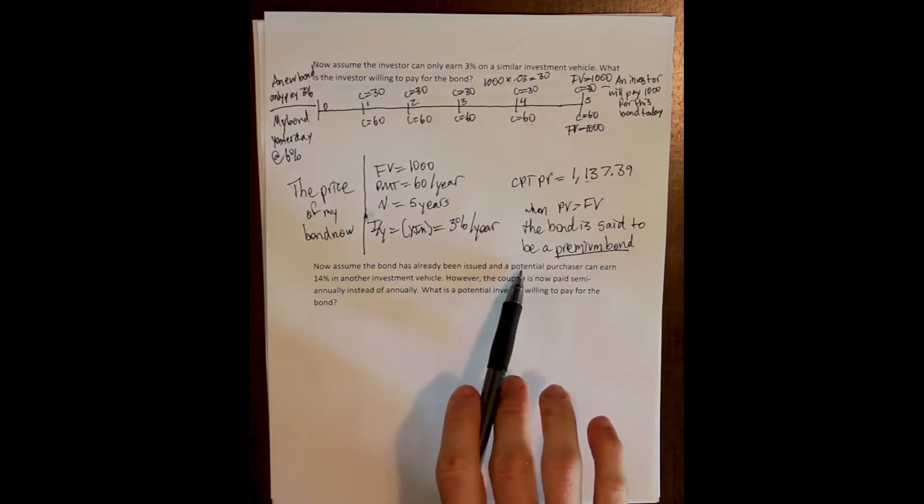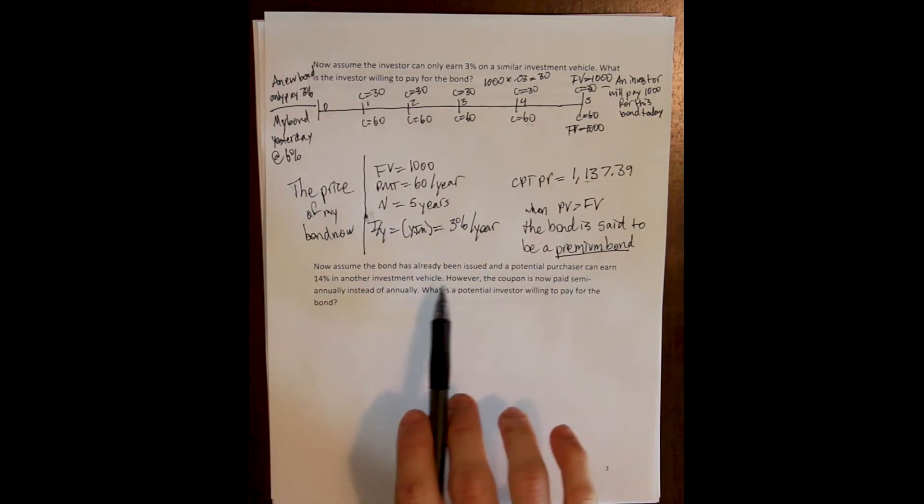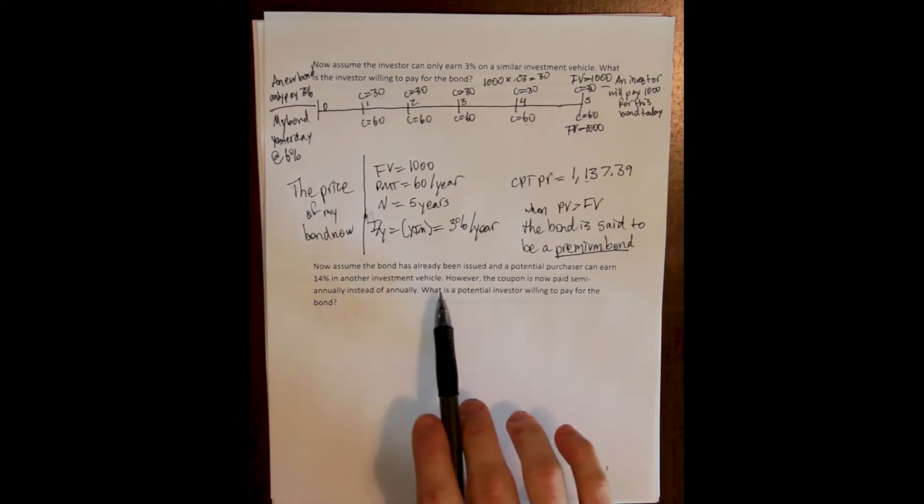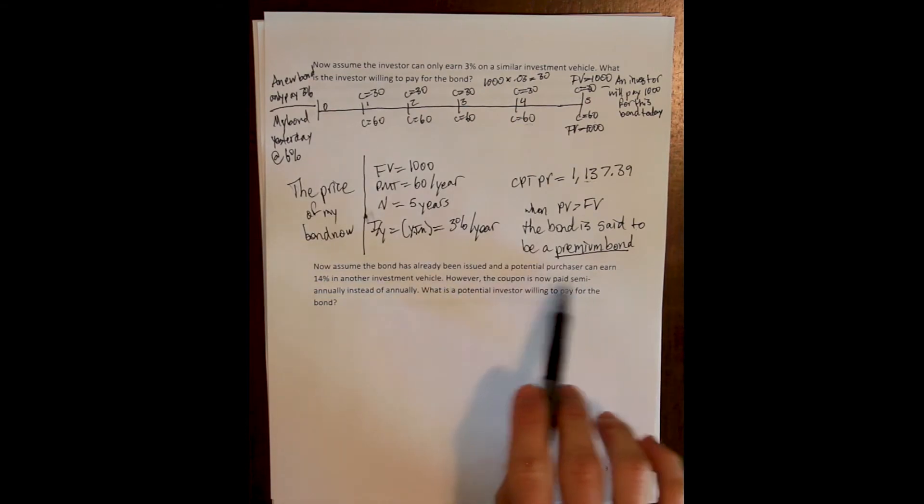So let's assume the bond's been issued and the potential purchaser can earn 14%. So back to our second problem. Rates have gone up from 6% to 14% in a day. The only thing that we want to change here is that the coupon is going to be paid semi-annually instead of annually.